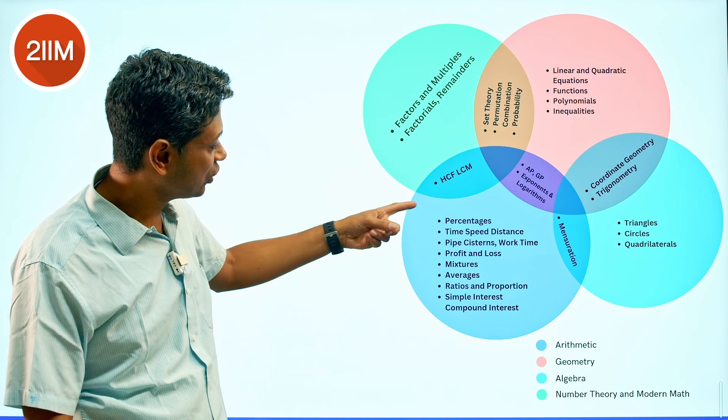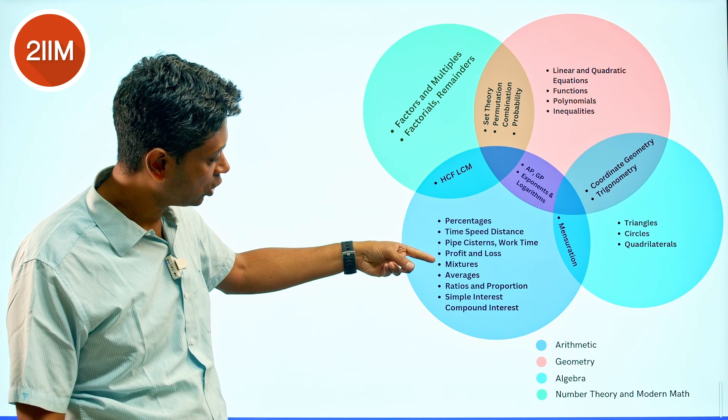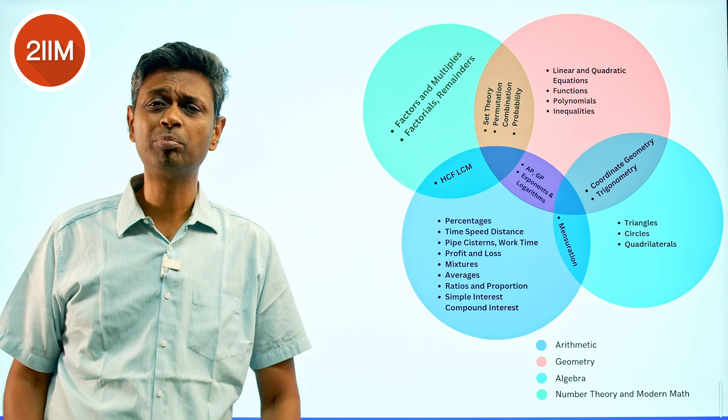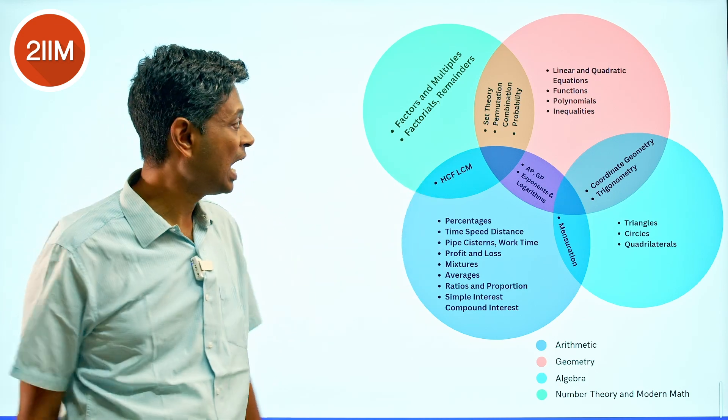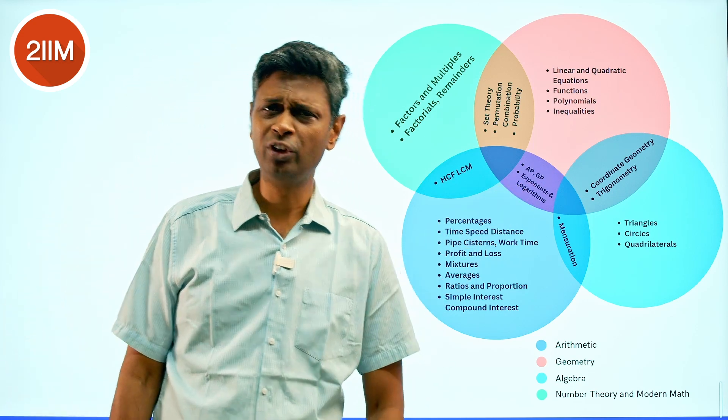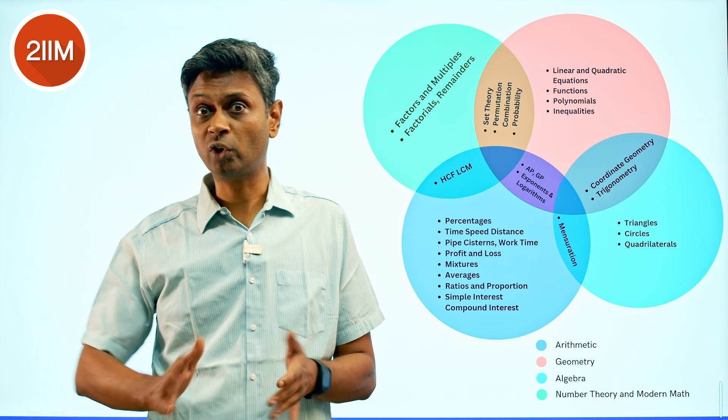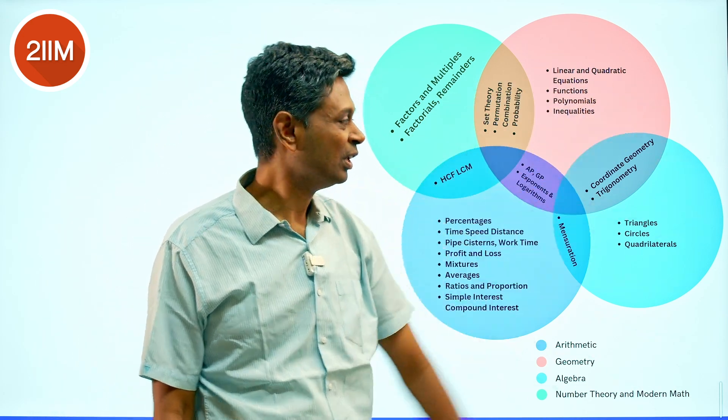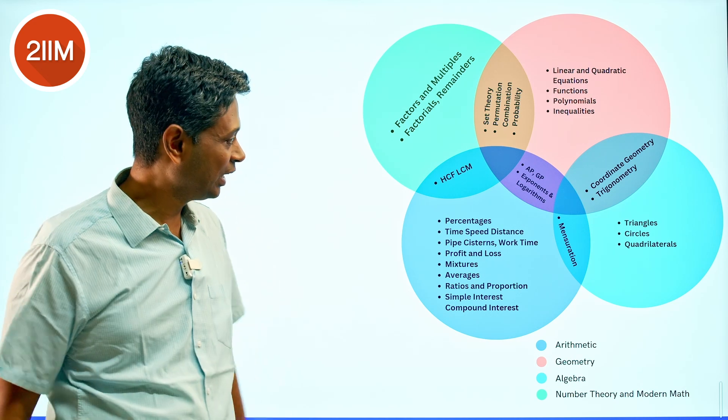Percentages, speed-time-distance, pipe-cistern, profit and loss, mixtures, averages, ratios - these are all classic arithmetic questions. I would put topics like exponents and logarithms in here, but I see quite a few people saying exponents and logarithms come under geometry.